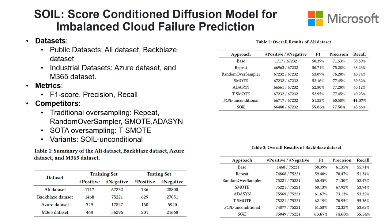We conduct experiments on four datasets, including two public datasets and two industrial datasets. We employ three widely used metrics in imbalanced learning — precision, recall, and F1-score — to comprehensively evaluate the performance of various methods and compare their effectiveness in addressing the class imbalance problem.